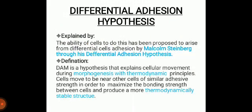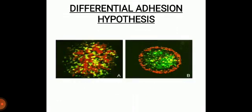The differential adhesion hypothesis explains the ability of cells to sort, proposed by Malcolm Steinberg. It is a hypothesis that explains cellular movement during morphogenesis with thermodynamic principles. Cells move near cells of similar adhesive strength in order to maximize the bonding strength between cells and produce a more thermodynamically stable structure. In the diagram, the differential adhesion hypothesis is illustrated.